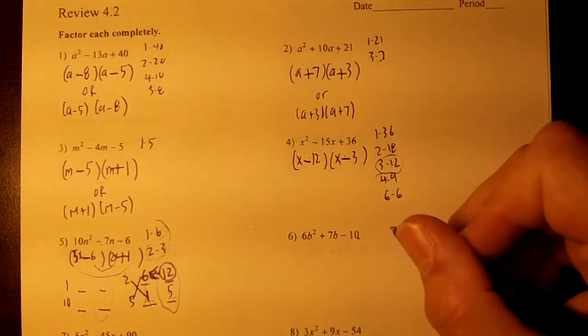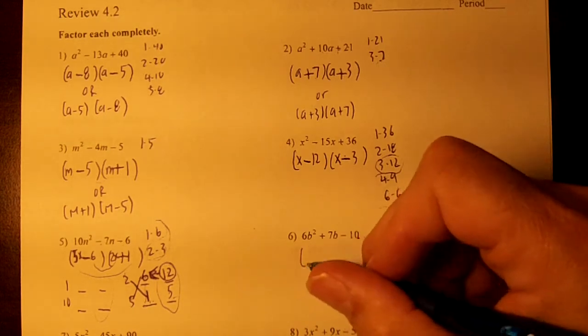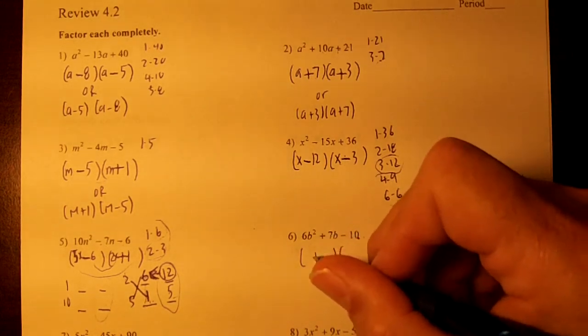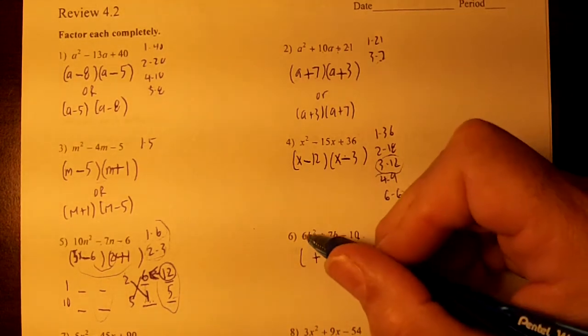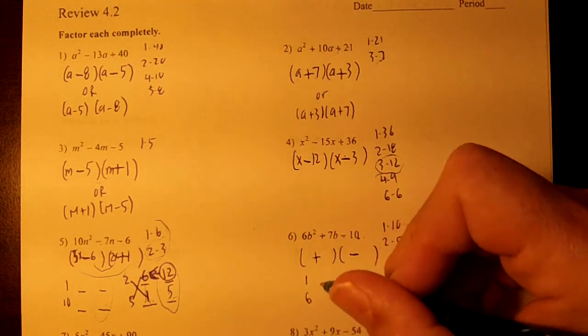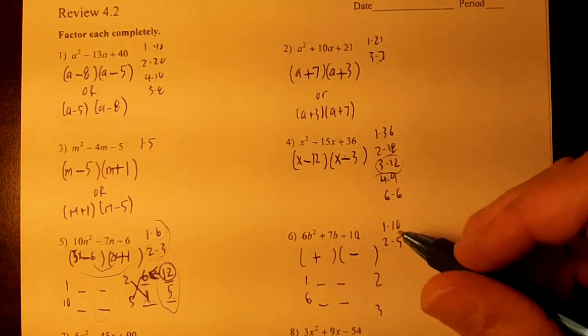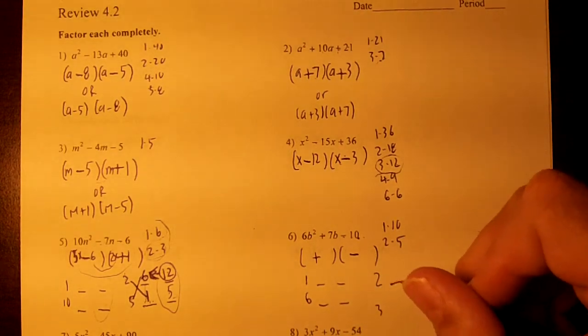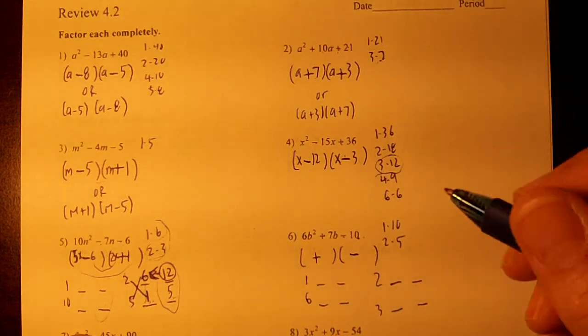Let's go to this one. Our factors of 10 are 1 and 10 and 2 and 5. Draw your two parentheses. Drop the plus. This is minus. The signs are different, so we're going to subtract. We have 2 factors of 6, so write your 1 and 6, and you can do 2 and 3. So we have the 1 and the 6, the 2 and the 3.